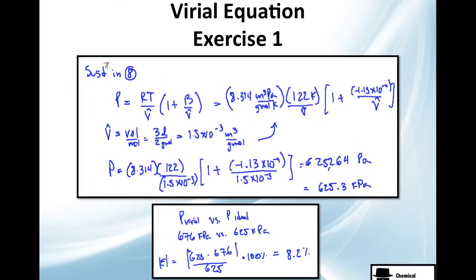Let's substitute number 7 in 8. We have everything, R we have it, T we have it. This we do not have, but we can calculate it, and this is the same. And B is just a number, actually it is equation 7.